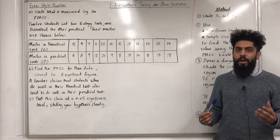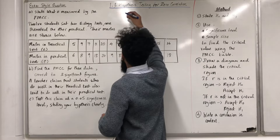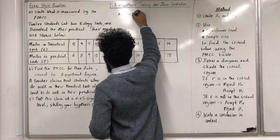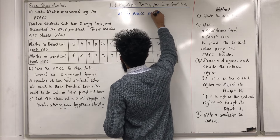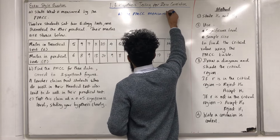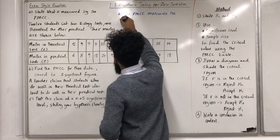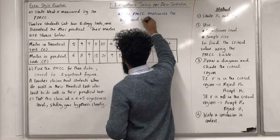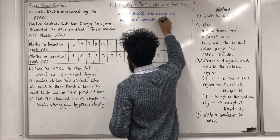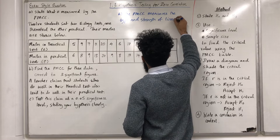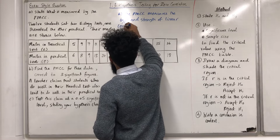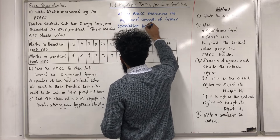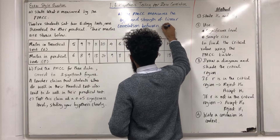For part A, you would need to write down that the PMCC measures the type and strength of linear correlation between two variables.